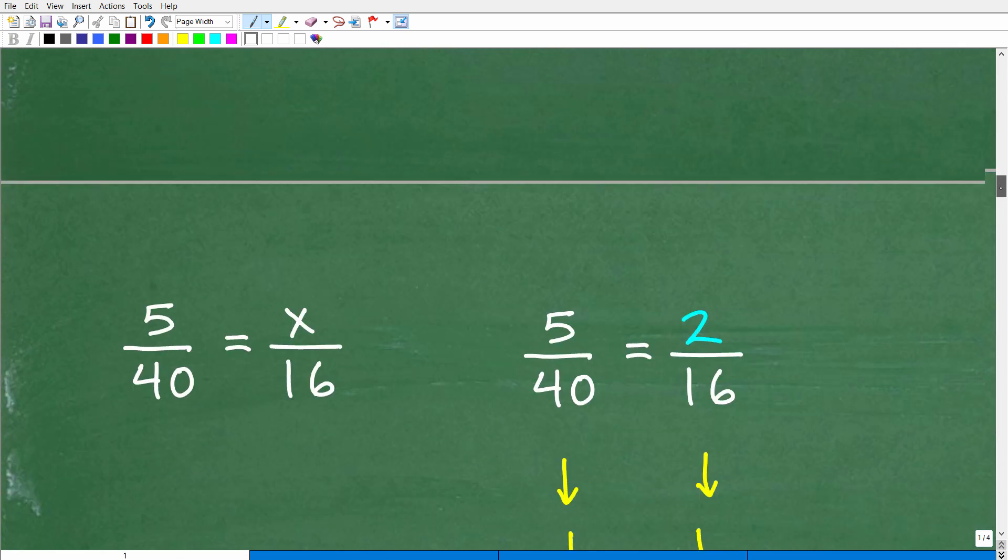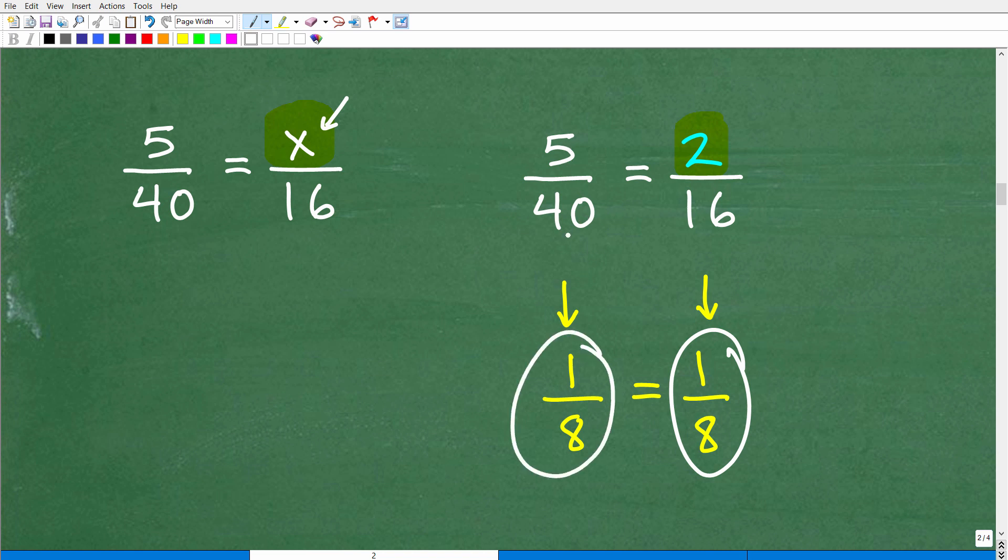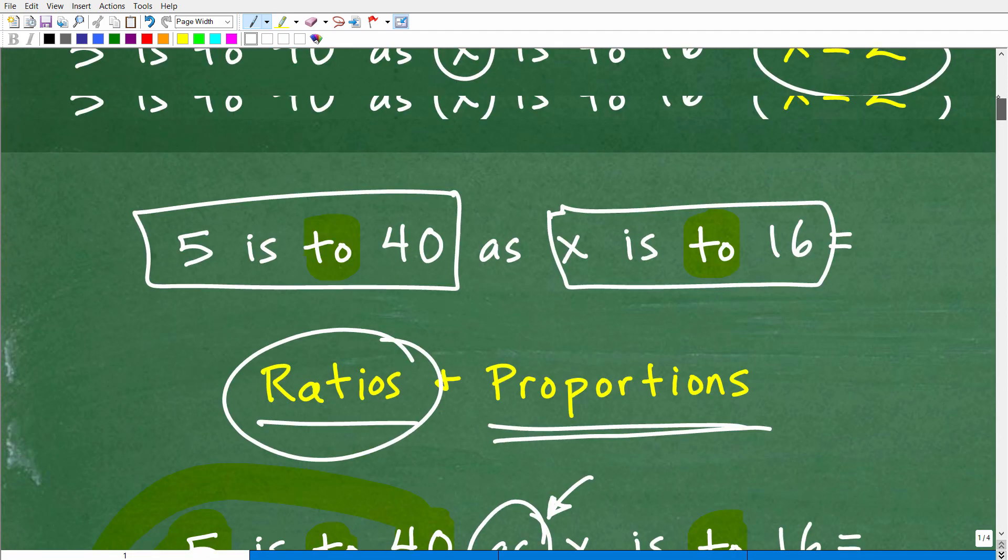But let's go ahead and verify that real quick just to make sure that we did this correct. So here was our original problem: 5 is to 40 as x is to 16. So we're saying this x is 2. Well, let's go ahead and plug in a 2 right here. So we have 5 is to 40 as 2 is to 16. Is this true? Well, you can see the cross product would in fact be true. 40 times 2 would be 80, and 5 times 16 would be 80. But another way we can kind of look at that is we have two fractions that we can reduce down. So 2 over 16, I can reduce down to the fraction 1 over 8. And 5 over 40, I can also reduce down to the fraction 1 over 8. So you can reduce these fractions down. You can clearly see that we are dealing with two equal fractions. So x is equal to 2 is in fact the correct solution to this proportion problem.